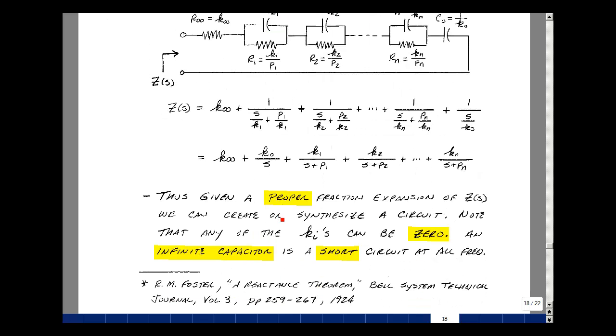Thus, if we have a proper fraction expansion of Z of S, we can create or synthesize a circuit. In some of these instances, the K sub i's could be zero, and that would correspond to a capacitor whose value is infinite. But all that means is that it looks like a short circuit for all frequencies except DC. And this is network function design.